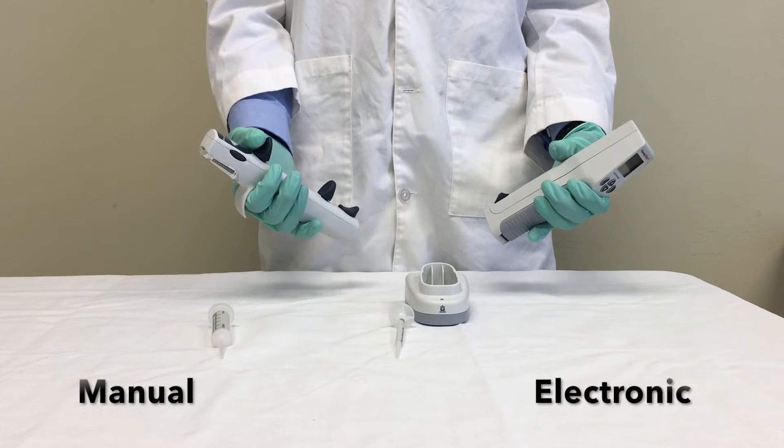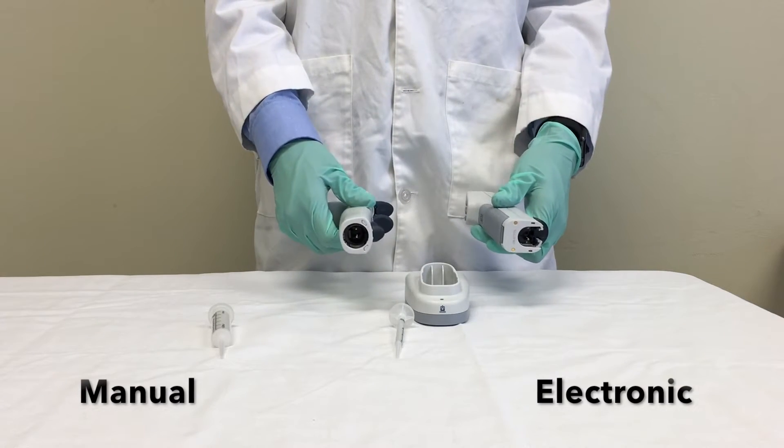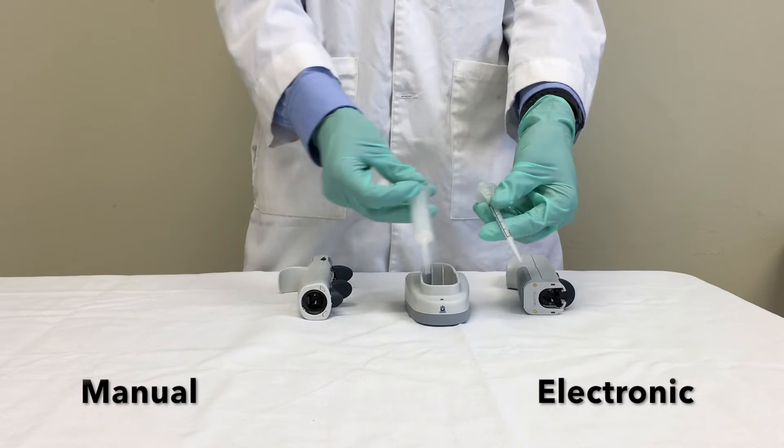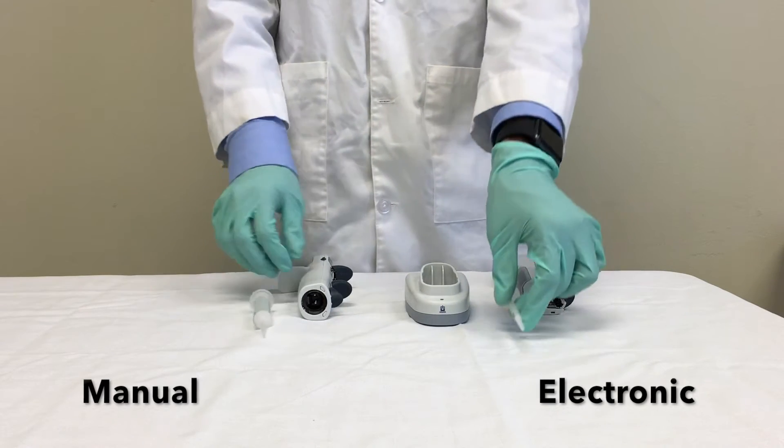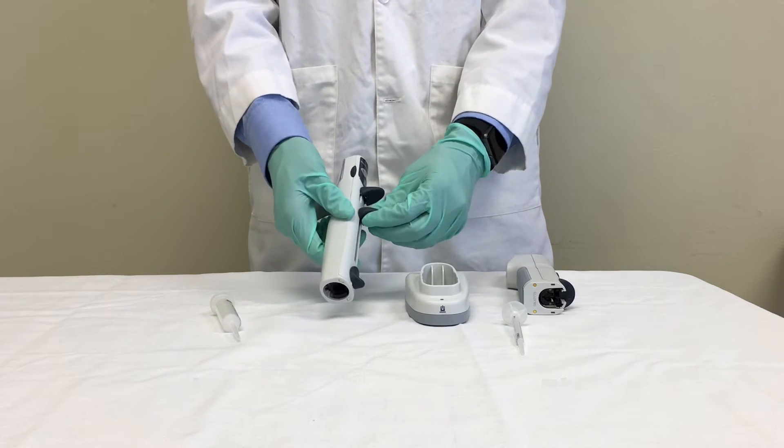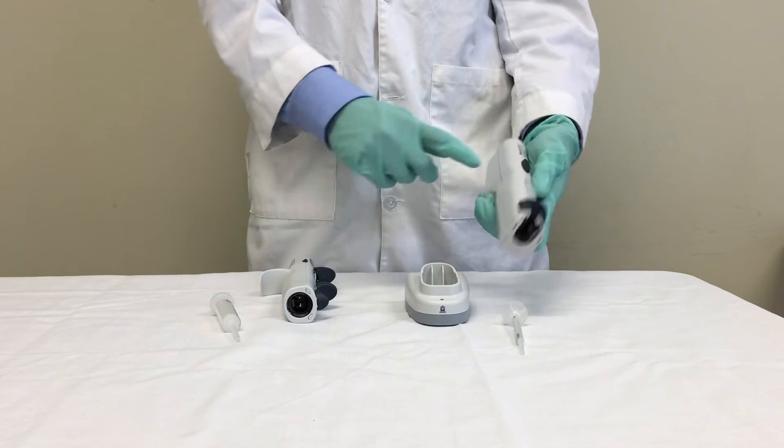The main difference between the two is how you set your pipette to dispense the volume you desire and the fact that the electronic requires no force when filling up the tip and dispensing, whereas the manual requires you to pull up on the filling lever to fill up your tip. Both are compatible with all different sizes and brands of pipette tips.